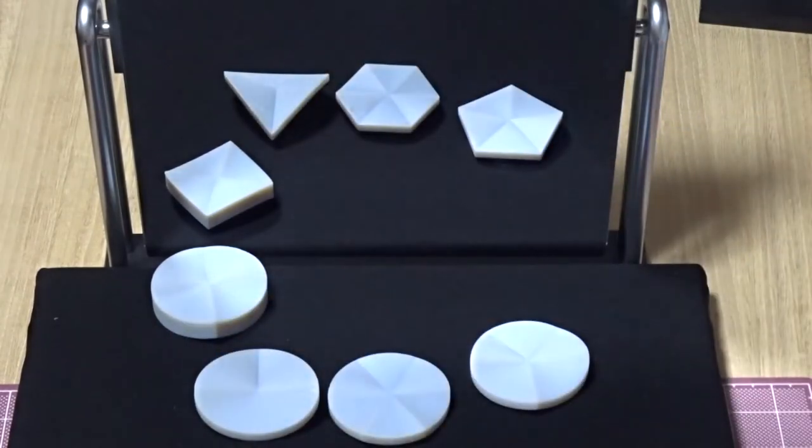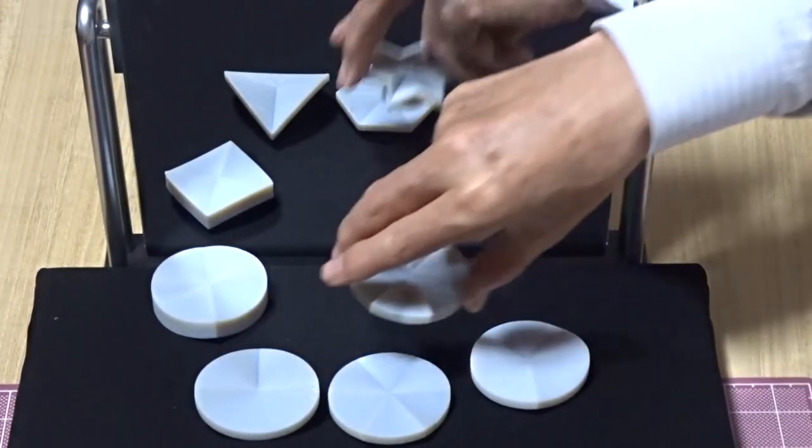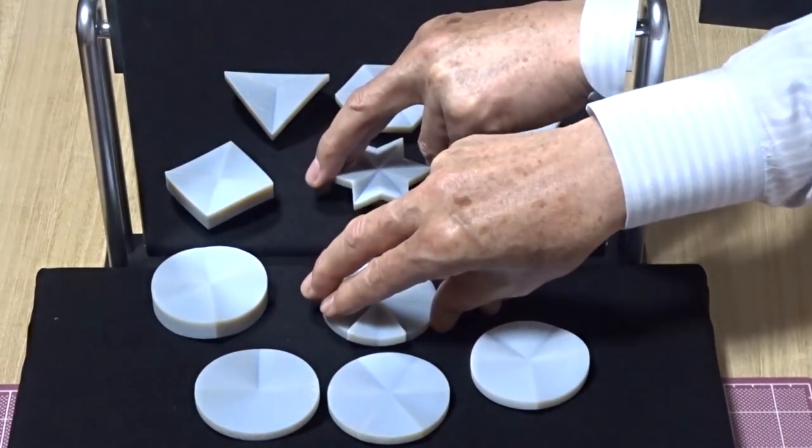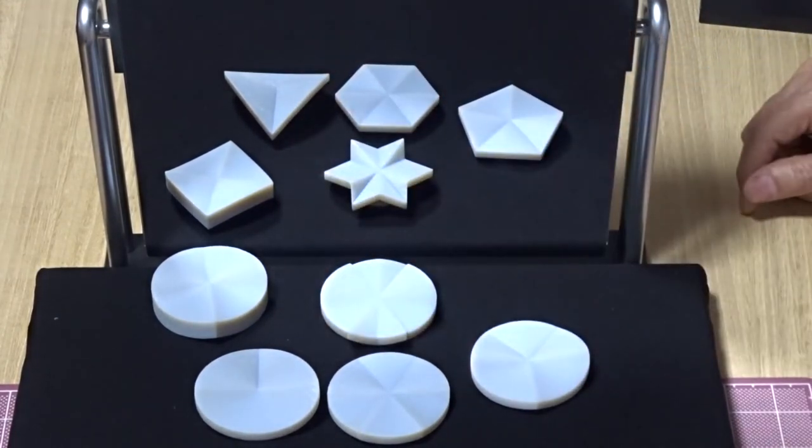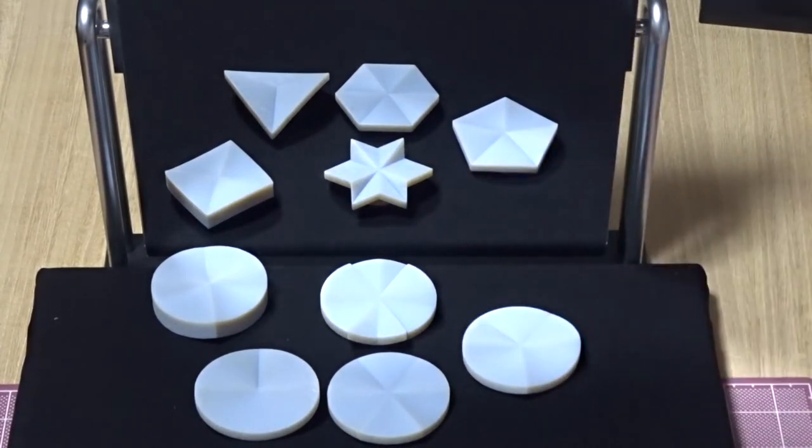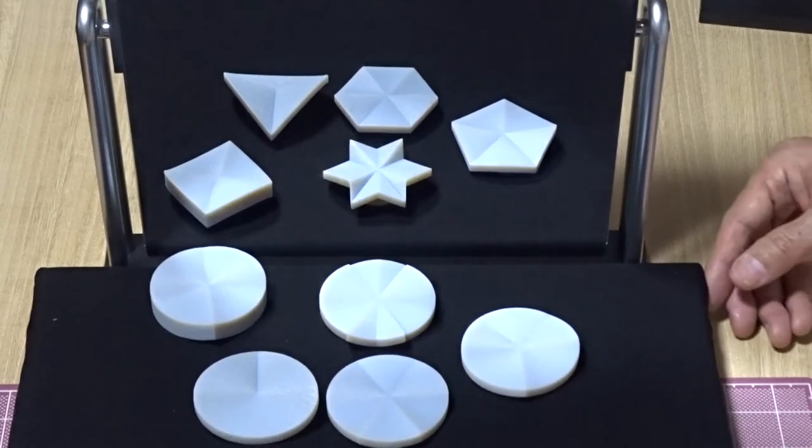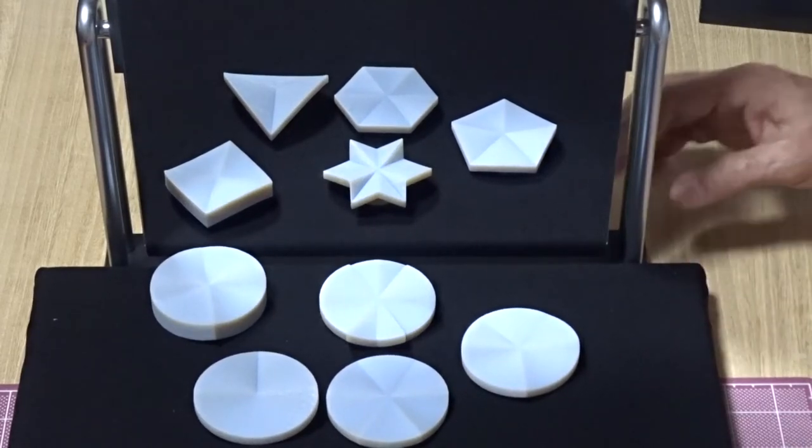And moreover, we can change the circle to a star, like this. This way, we can change the circular shape to various other shapes, using the same way of construction.